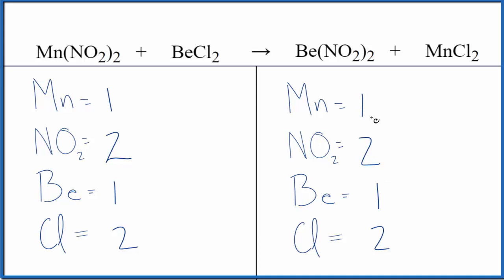And you can see we figured that out pretty quickly by using this nitrite trick here where we consider the nitrite thing one item if it appears on both sides.